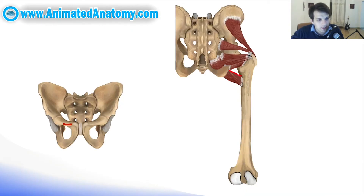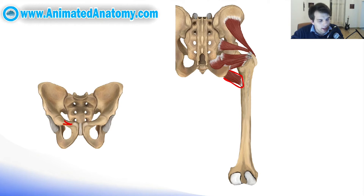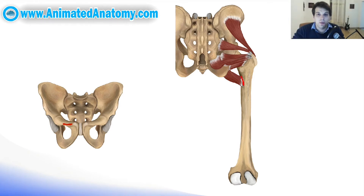You can see the muscle here — that is the pectineus muscle. It originates on the pubis on the pectineal line, and it inserts on the femur on the pectineal line. So remember that: the pectineus muscle and the two pectineal lines. Besides adduction, this muscle also performs flexion. And unlike all the other adductors, it is not innervated by the obturator nerve but by the femoral nerve.